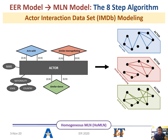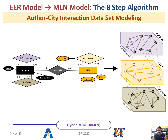Similarly, for the IMDB scenario, due to the presence of only recursive binary relationships on just one type of entity, we will generate a homogeneous multi-layer network. Going forward, for the author-city interaction scenario presented earlier, due to the presence of two recursive relationships on the author entity and also another relationship between the author and the city entity, the type of MLN produced is of a hybrid nature.